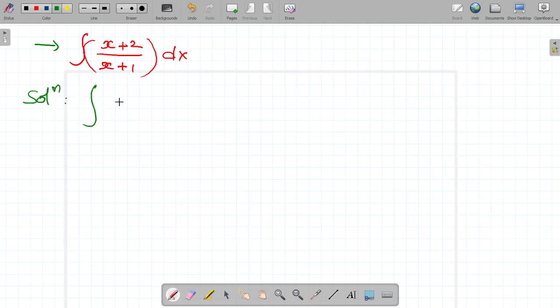First, I have given information integral x plus 2 by x plus 1 into dx. So, in our mathematics, trial and error methods are compulsory, necessary, mandatory or necessary. Why? Because otherwise, you cannot solve this.